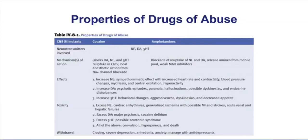There are several drugs in this chapter that we've previously reviewed in earlier chapters in CNS. For example, the first part of our table here looks at cocaine and amphetamines. These are drugs that we have previously discussed. This table does a very nice job of reviewing their properties.